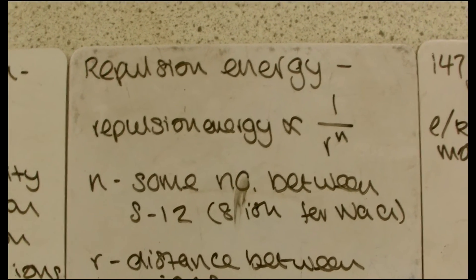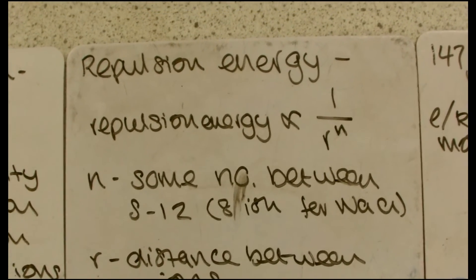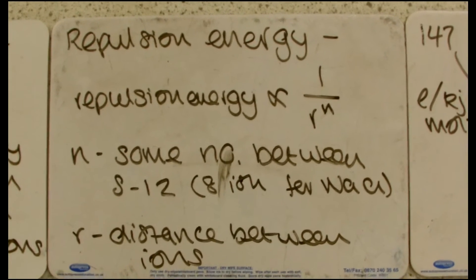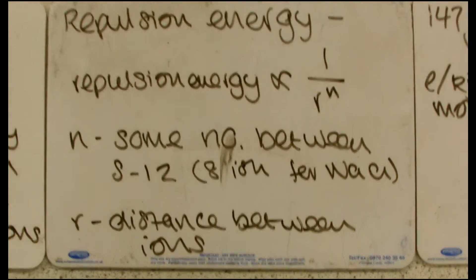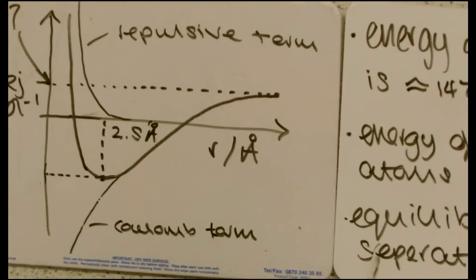Now if we're modeling the simplest ion, it's going to be Na and Cl. The number for N is going to be about 8. And so you can see that this relationship is going to spiral off really quickly upwards. And so if we plot a graph of both of them,